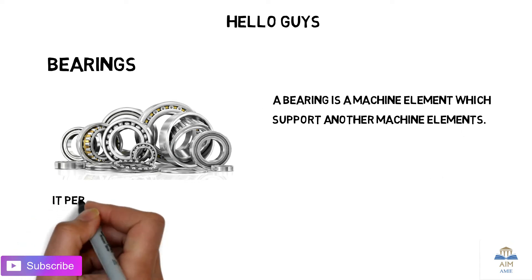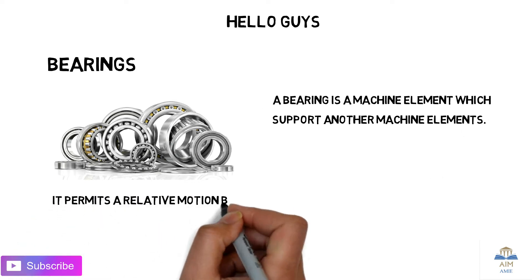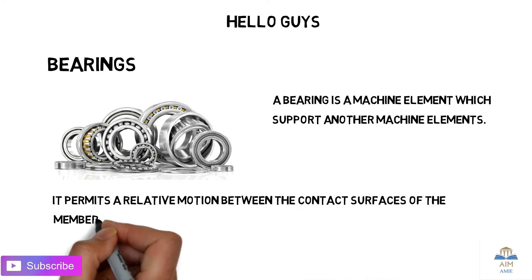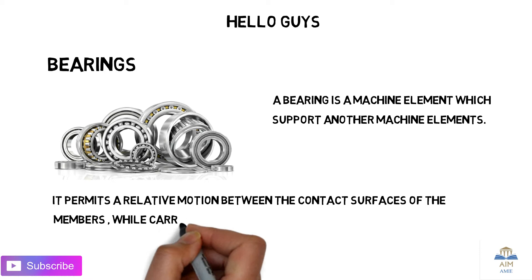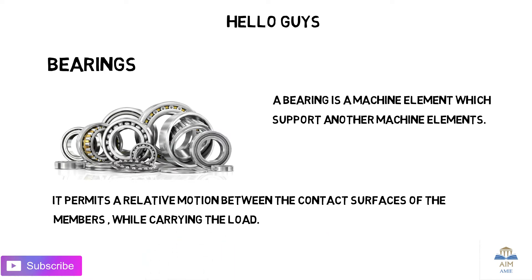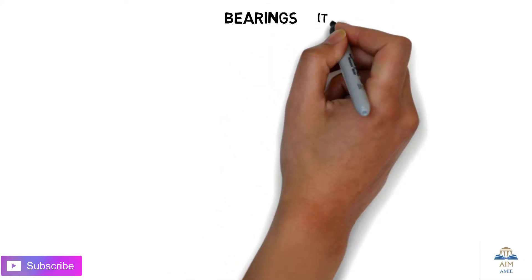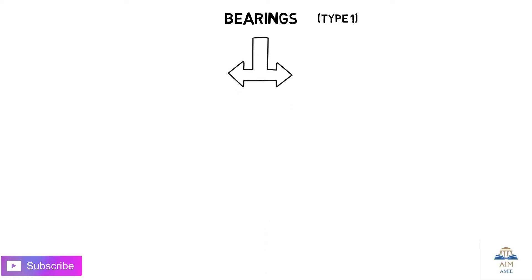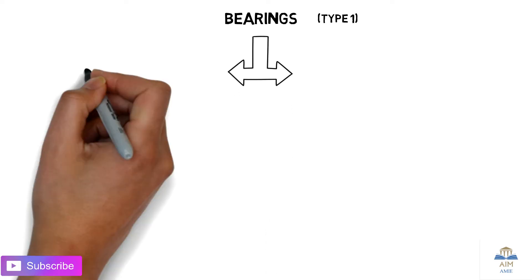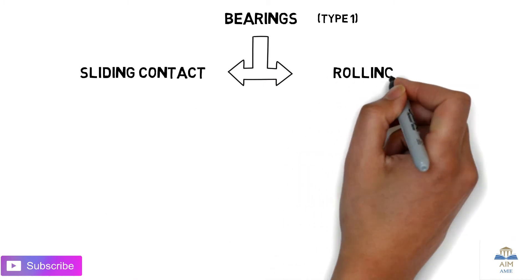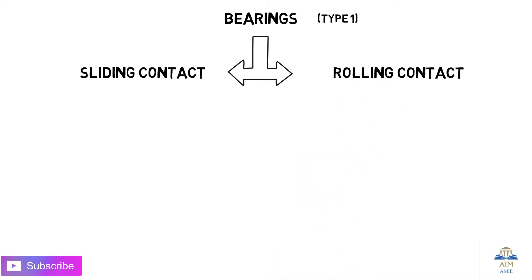Bearings permit the relative motion between the contact surfaces of the members, or machine elements, while in motion and while carrying the load. Bearings are classified into two main types: Type 1 is the sliding contact bearing, and Type 2 is the rolling contact bearing.